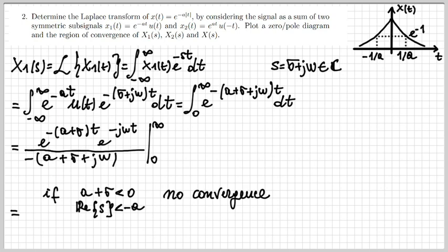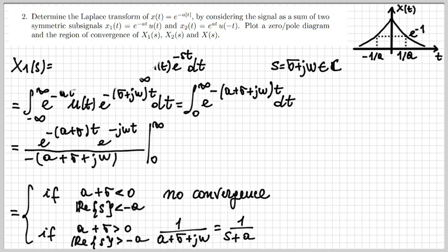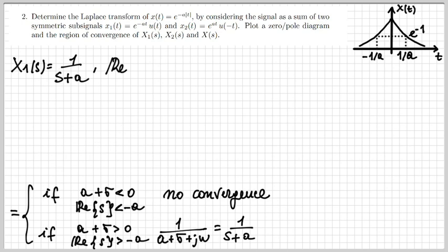To sum up: when a plus sigma is negative, equivalently when sigma is smaller than minus a, or when the real part of s is smaller than minus a, there is no convergence. But when a plus sigma is positive, I do have convergence, and the result for the Laplace transform can be written in compact form as 1/(s+a). So the Laplace transform of x1 is 1/(s+a) when the real part of s is larger than minus a — that's the region of convergence.